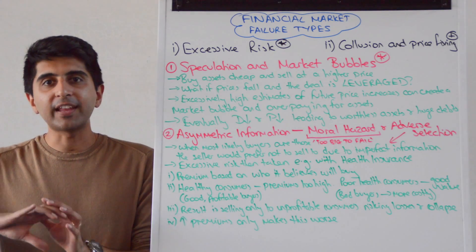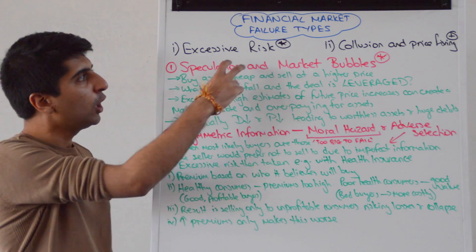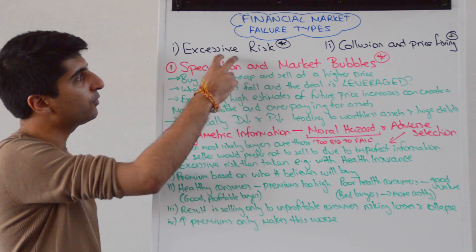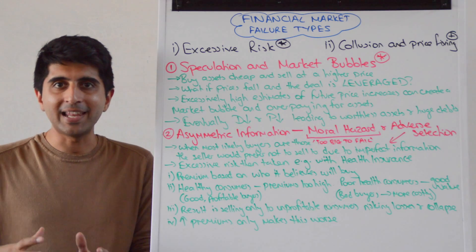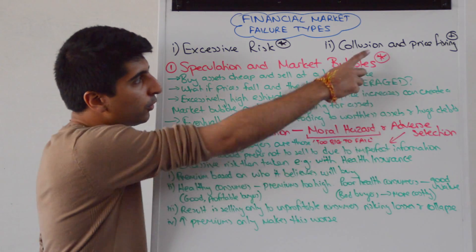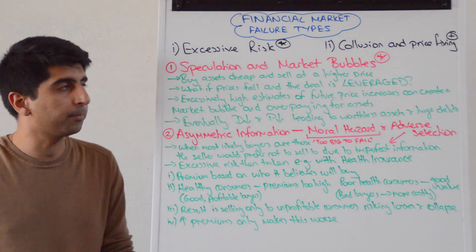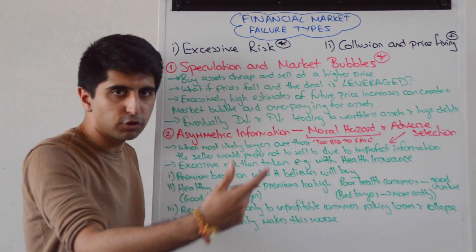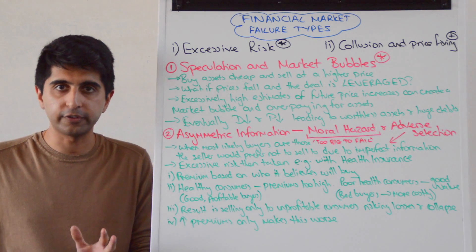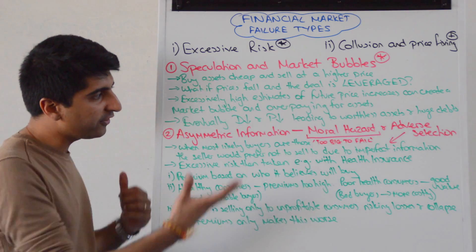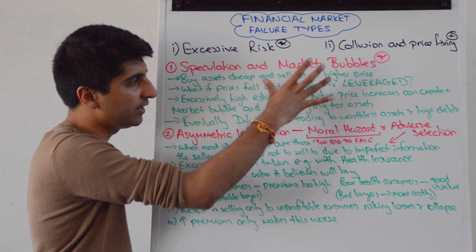Hi everybody. In my last video we looked at the generic ways in which we can section market failure. We said we can look at the types of market failure in terms of those that promote excessive risk, the risk of bank failure and total financial market collapse. We also looked at collusive activity between financial market agents, like banks, including price fixing of interest rates and exchange rates, which can lead to welfare losses in society. In this video we're going to look at the four specific types of market failure which we can then put into these groups.